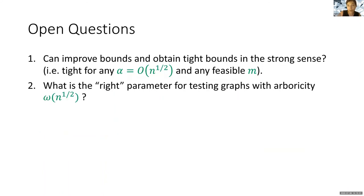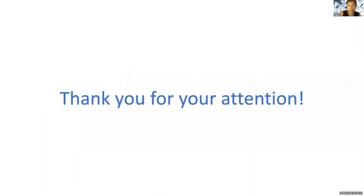There are two main open questions. One: can we improve the bounds and obtain tight bounds in the strong sense for every graph which has arboricity at most √n? And the other obvious question is: what is the right parameter for testing a graph with arboricity greater than √n? Thank you for your attention.